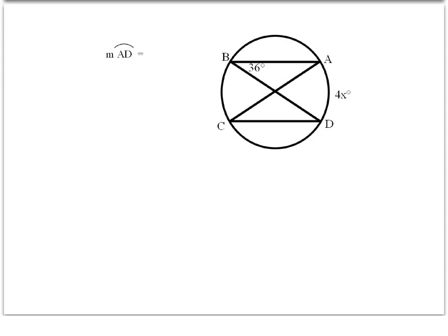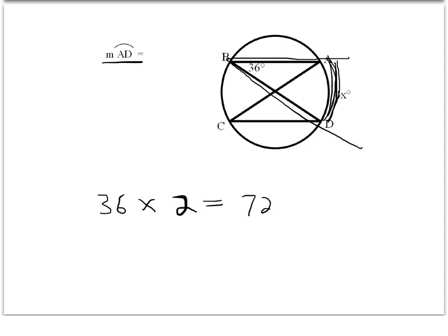Our next problem is asking us to find the measure of arc AD — that's this arc right here. We just talked about this inscribed angle intercepting that arc, and we know that the intercepted arc is going to be twice the measure of the inscribed angle. So if angle ABD is 36 degrees, we double that, and the intercepted arc is 72 degrees.